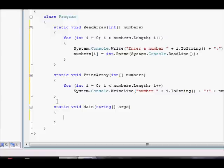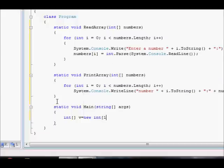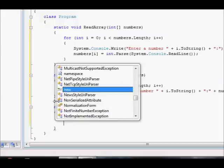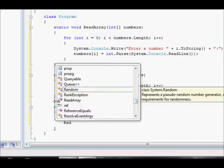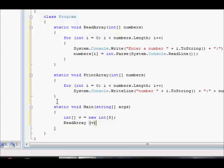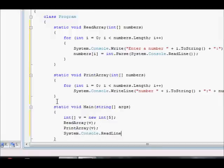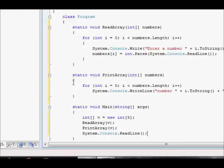So what are we going to do next? We are going to define this. Int v equal a new int of let's say five numbers only. So I'm going to say read array. Read array. And I will pass v over here. And then I'm going to say print array. I will pass v again. And then we have system console read line just to keep the window open. Let's also close that.